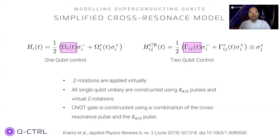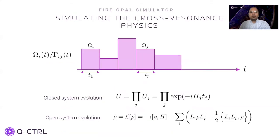The CNOT gate, along with single qubit unitaries, forms a complete gate set for all quantum circuits. For details of the cross-resonance and other superconducting qubit models, please refer to Krantz et al. These single and two qubit controls are represented by segmented functions. On each time segment, the control strength remains constant. Our cross-resonance simulator simulates each of these time segments in a time-ordered fashion, solving either a unitary evolution or a Lindbladian simulation, depending on the interaction of qubits with the external sources of noise.